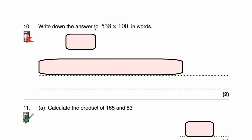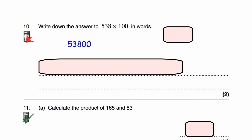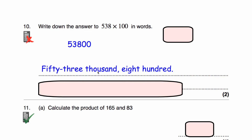Question 10: we've been asked to write the answer to 538 multiplied by 100 in words. Multiplying by 100 moves all digits two columns to the left: the 8 moves into hundreds, the 3 into thousands, the 5 into tens of thousands, with two zeros filling the tens and units columns. The answer is 53,800, written as fifty-three thousand, eight hundred.